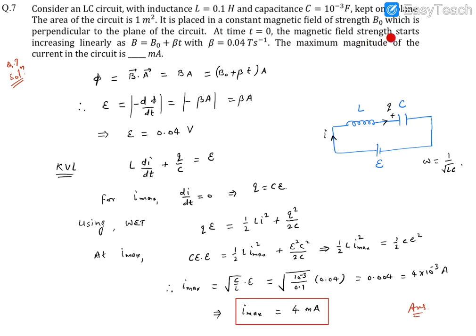At t = 0, the magnetic field strength starts increasing linearly with time like B₀ + βt where β is a constant having value 0.04 tesla per second. The maximum magnitude of the current in this circuit is going to be in milliampere.